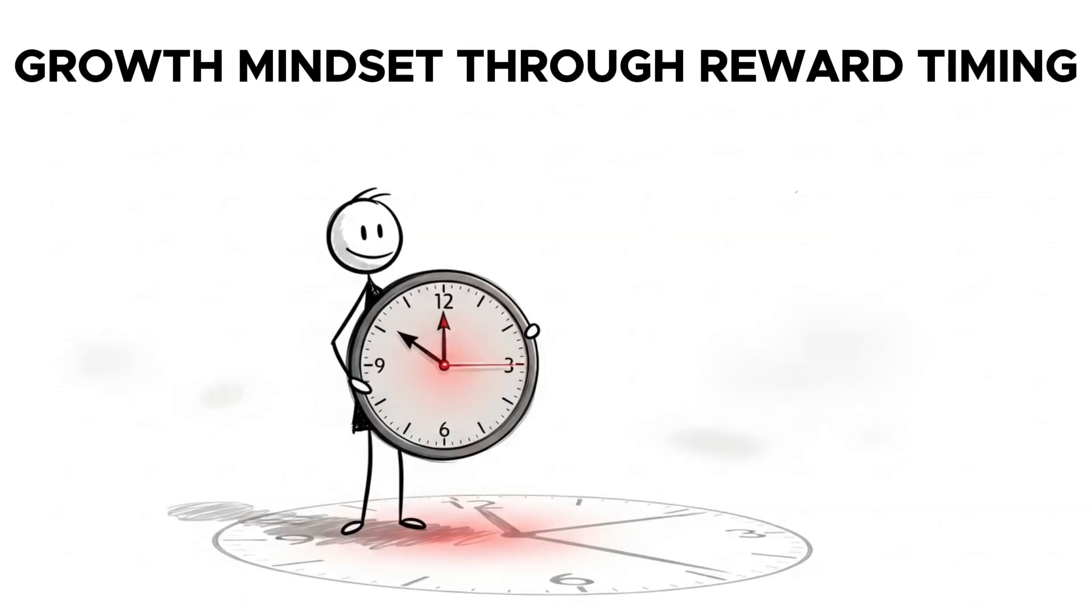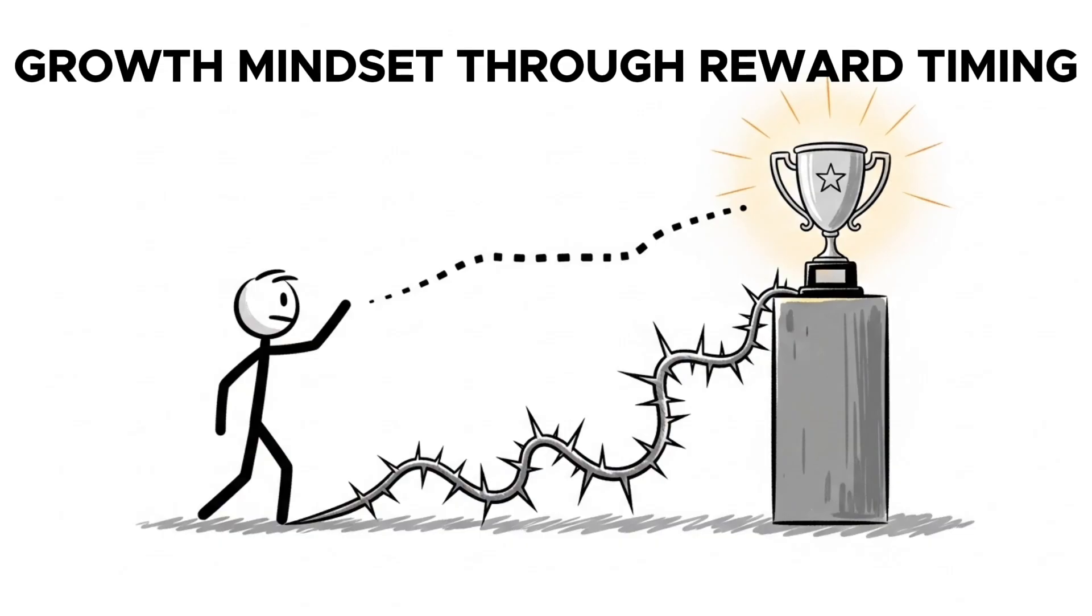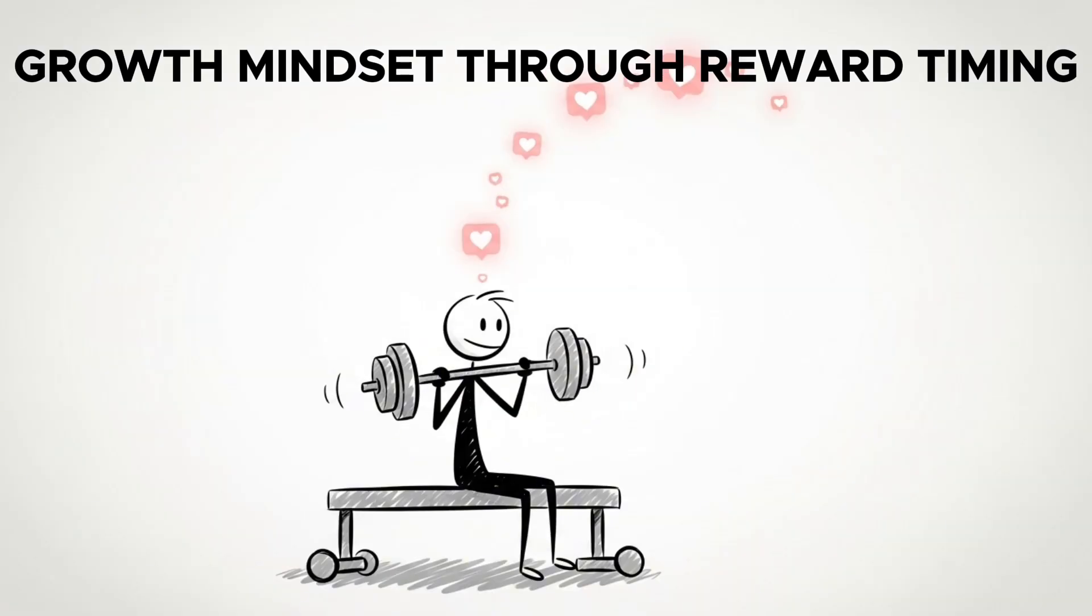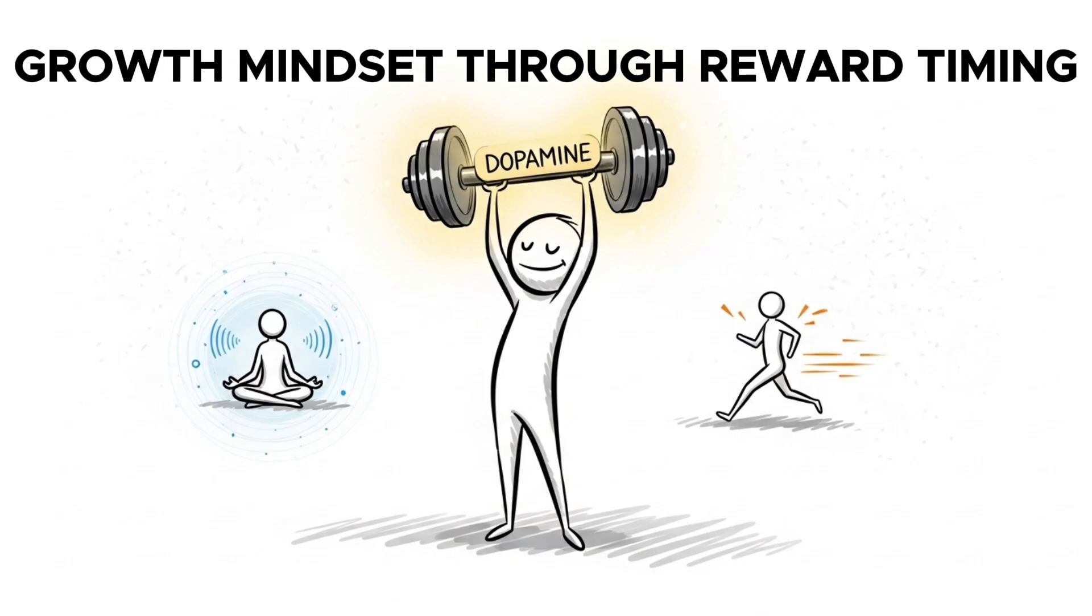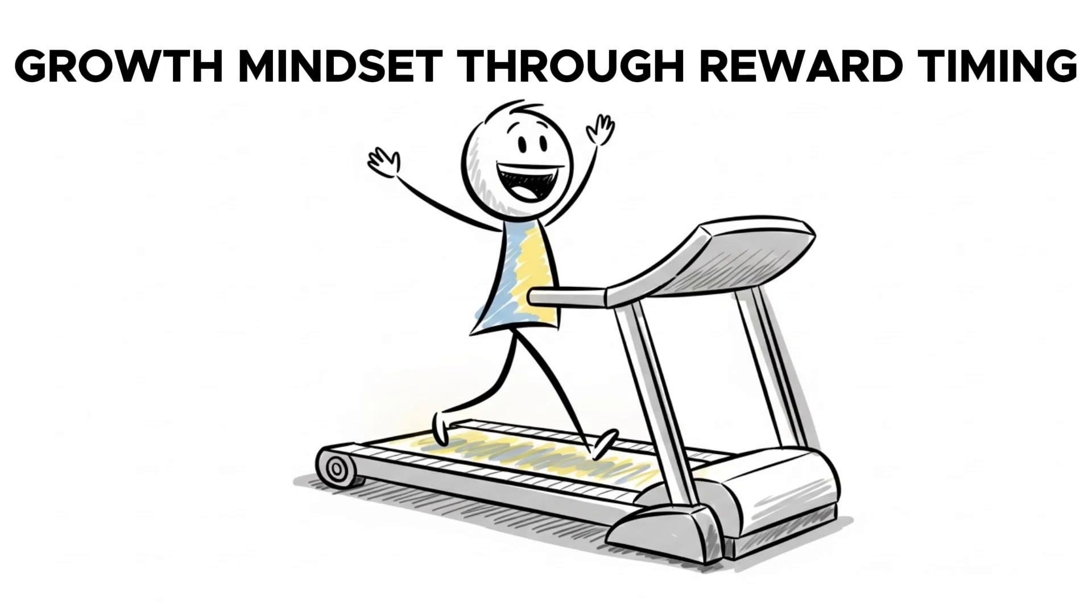This is why the timing of a reward is very important. To cultivate a true growth mindset, you must learn to evoke dopamine from the friction itself. This is the highest form of mastery. By consciously telling yourself, I am choosing this effort, this discomfort means I am growing, you are attaching dopamine to the process: the grind, the reps, the mistakes, the struggles, and the long hours. And in doing so, you train your brain to find effort inherently rewarding.